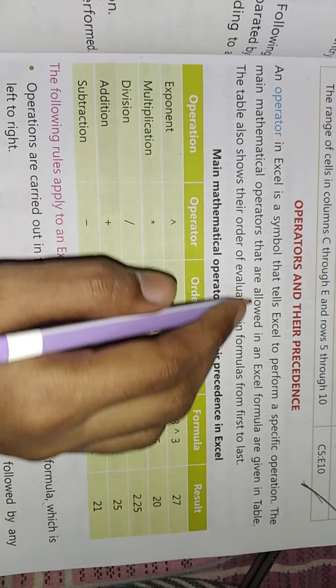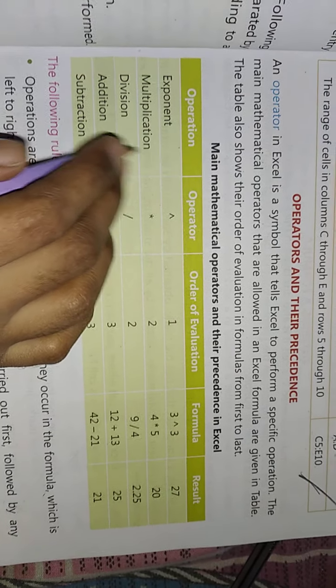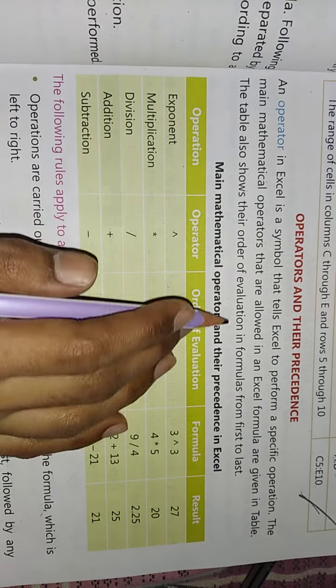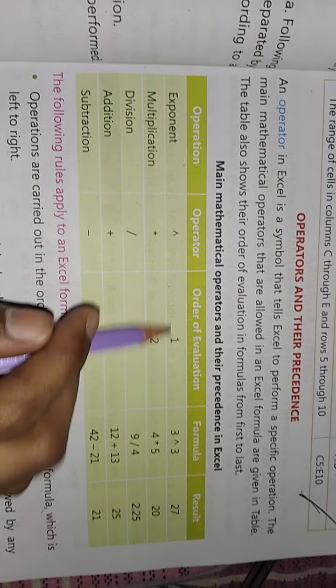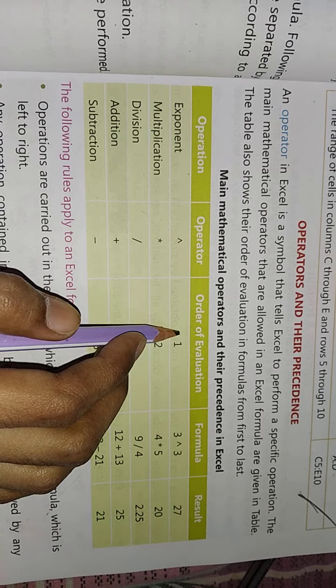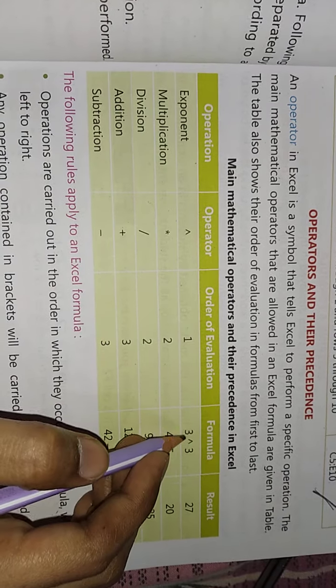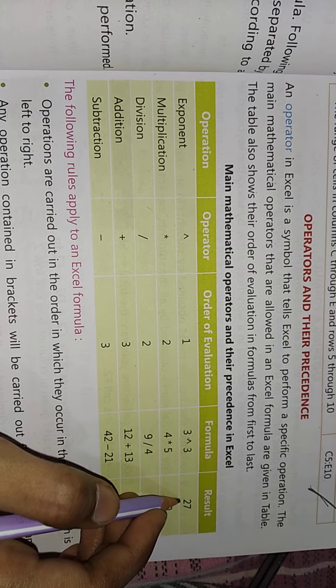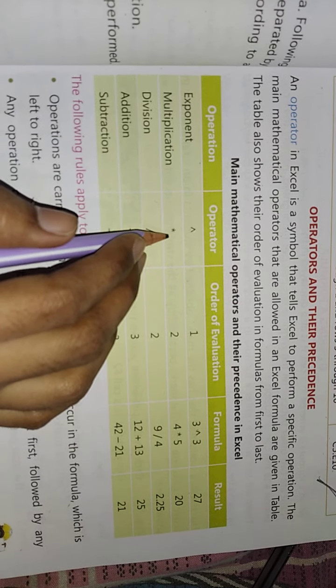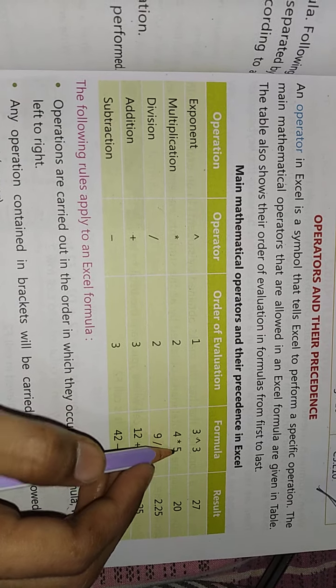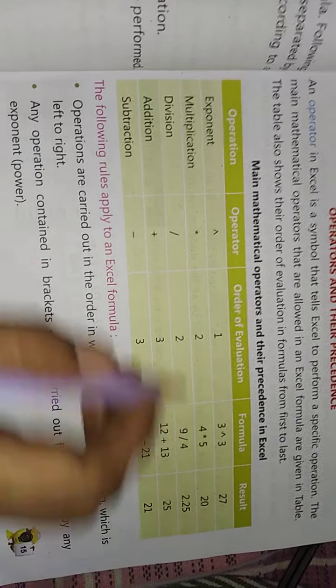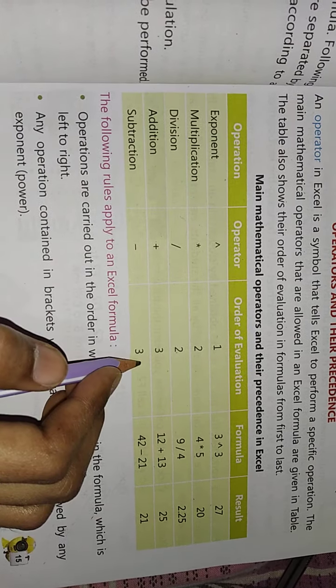The main mathematical operators allowed in an Excel formula are given in the table, along with their order of evaluation from first to last. Then comes multiplication, order of evaluation is 2. Division also has order of evaluation 2. Addition is order number 3 and subtraction is also order number 3.